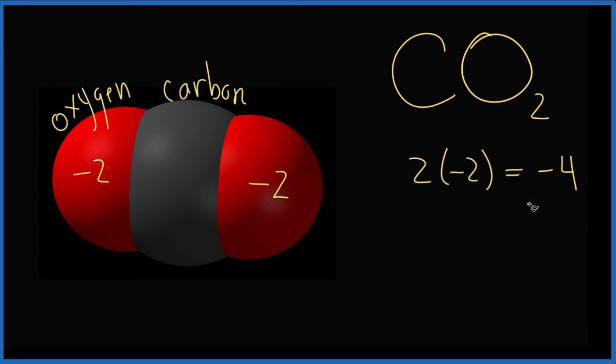And we know we have to add something to that negative four to get a zero, because this is a neutral molecule. So minus four plus four, that'll give us zero. And that means the oxidation number on carbon is going to be plus four.